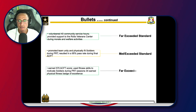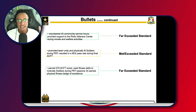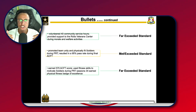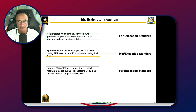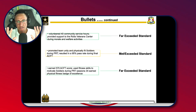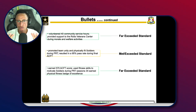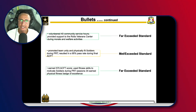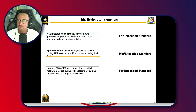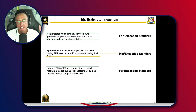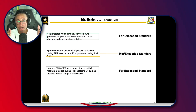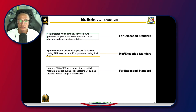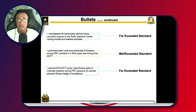Now let's talk about how to classify bullets between met standard, exceeded standard, and far exceeded standard. Far exceeded standard means you set yourself apart not just from peers but from the entire organization — you make the organization look good. Example far exceeded bullet: 'Volunteered 40 community service hours; provided support to the roll of veteran center during morale and welfare activities.' Not many people will volunteer an entire work week's worth of hours — you have to recognize that.